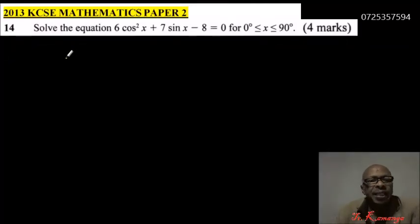This is 2013 KCSE Mathematics Paper 2, question number 14. Solve the equation 6 cos²x + 7 sin x - 8 = 0 for the range x is greater than or equal to 0, less than or equal to 90.